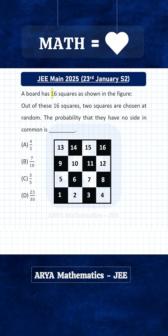A board had 16 squares as shown in the figure. Out of these 16 squares, 2 squares are selected at random. Find the probability that these 2 selected squares have no side in common.